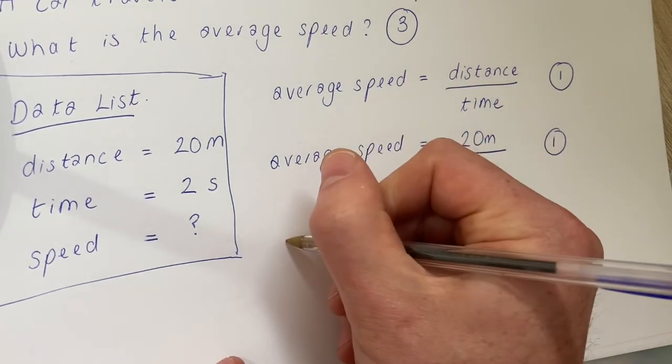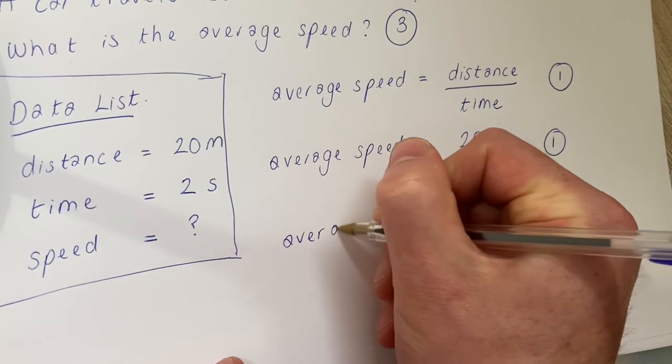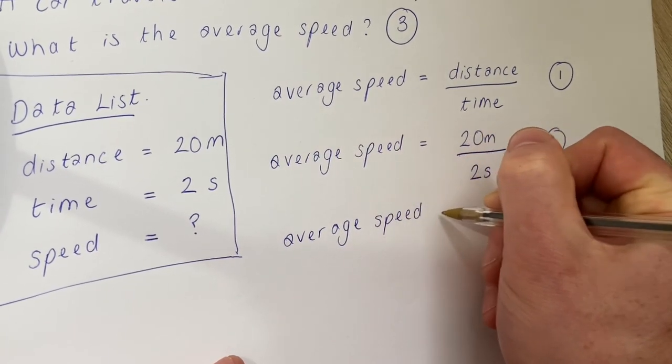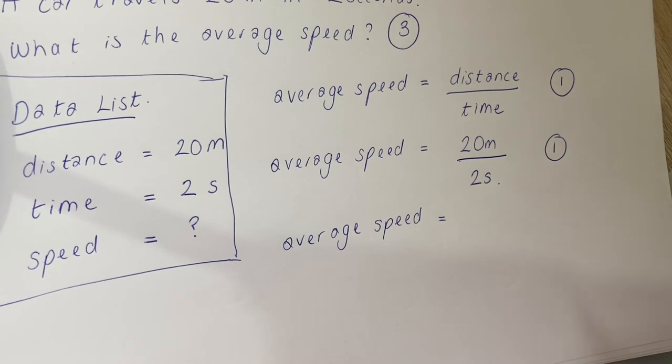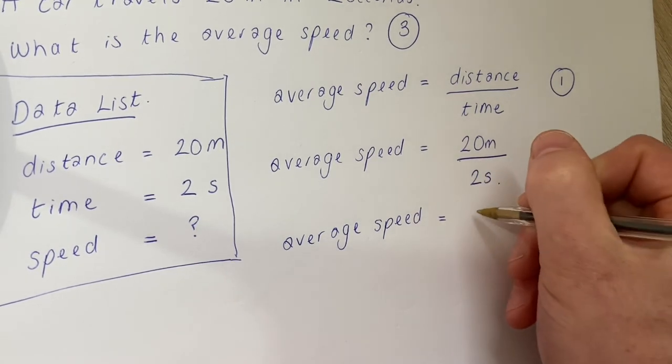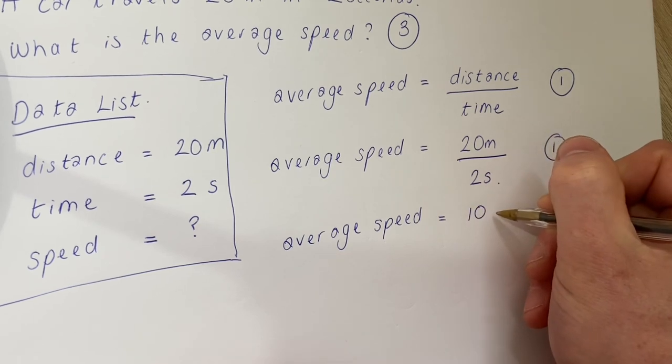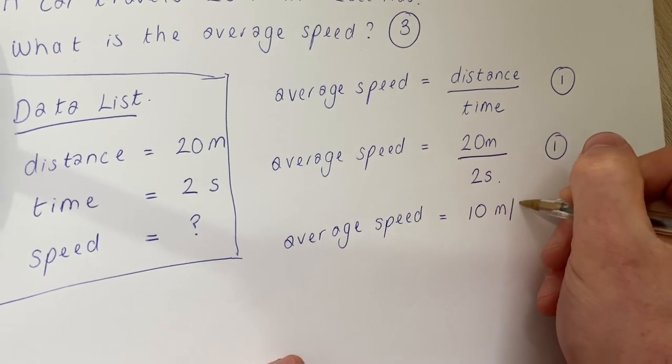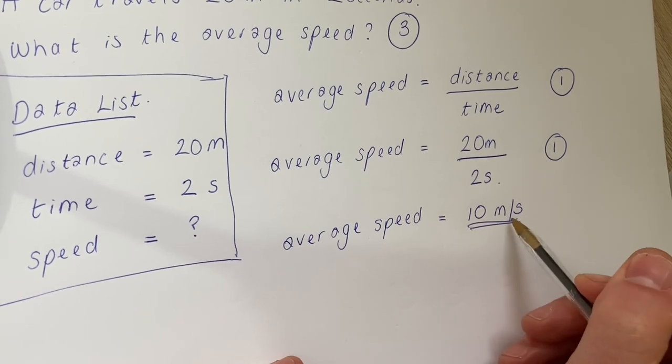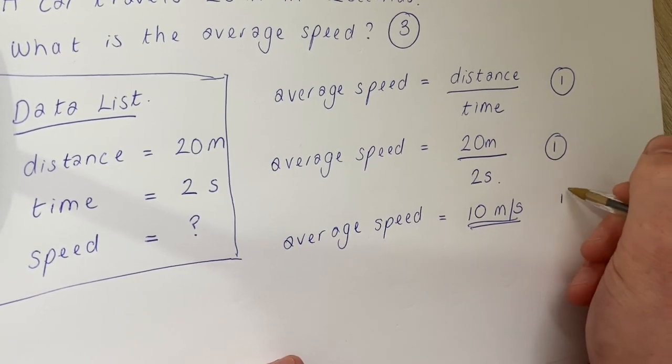And then the final mark is for actually doing the calculation. You can use a calculator for all your questions in science. So 20 divided by 2 is equal to 10 metres per second. You must make sure that you put your units in order to get the third mark.